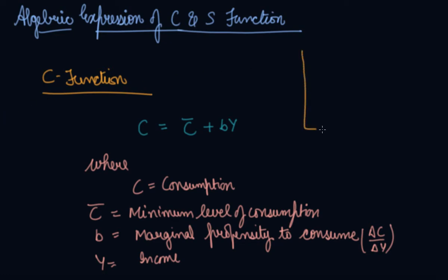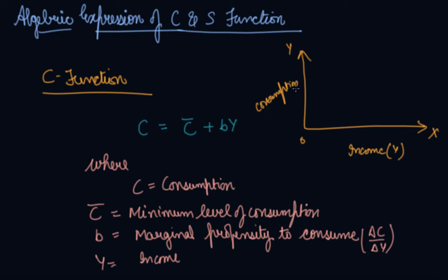So let's see this algebraic function graphically. This is your income on the x-axis and this is your consumption, that is C, on the y-axis. This is your minimum level of consumption that you do even when your income is zero. Your consumption goes like this — income starts from zero and goes on increasing. This is your income, this is your C, and this is your c'.